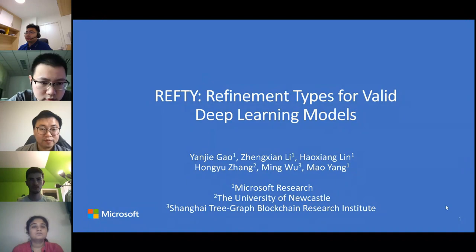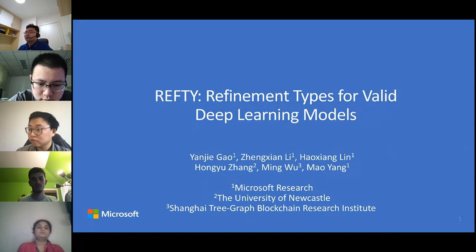Hello, everyone. I'm Yanjie. I will be presenting our work REVT — refinement types for valid deep learning models. This is joint work with Zheng Xianli, Hao Xianglin from Microsoft Research, Hong Yu Zhang, Ming Wu from TreeGraph Blockchain Research, and Mao Yang from Microsoft Research.